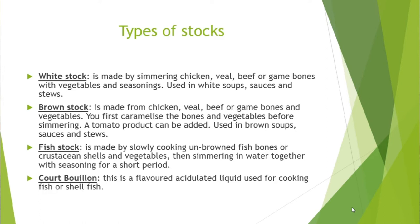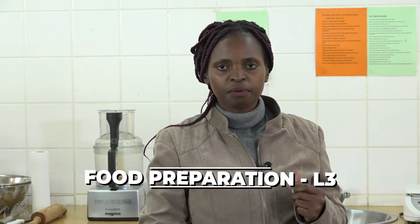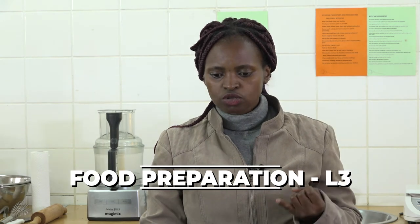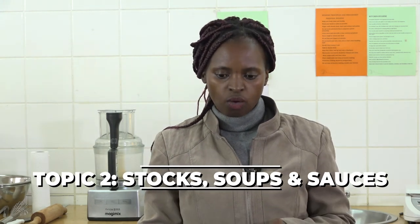There are different types of stocks. The white stock is made by simmering chicken, veal, beef or game bones with vegetables. The white stock is used in white soups, sauces and stews. Remember the mirepoix is composed of carrot, onion and leeks, which we use when making the stock.